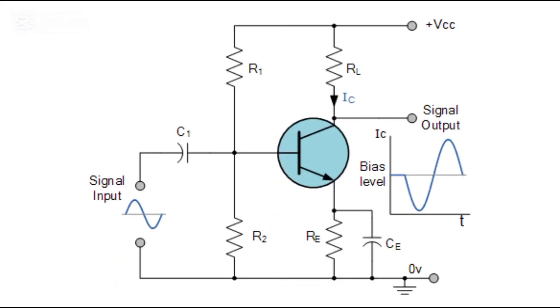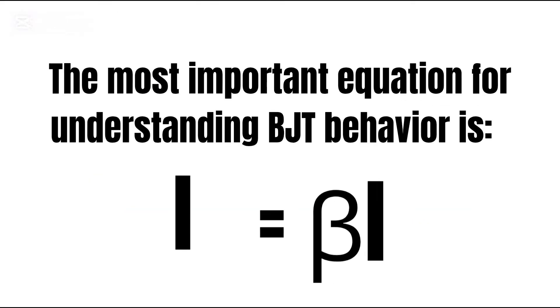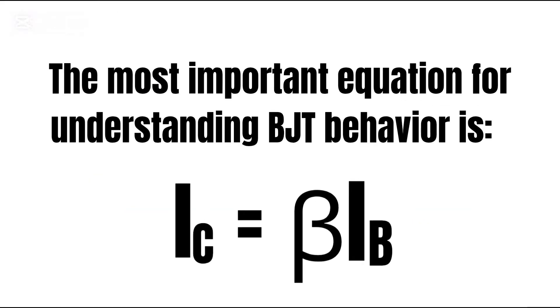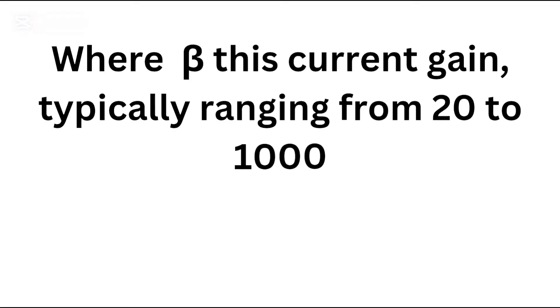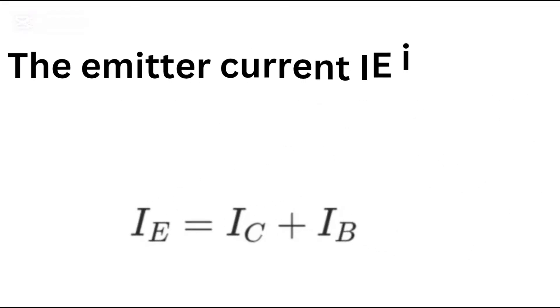Understanding the current relationships in a BJT is crucial. The most important equation for understanding BJT behavior is, IC equals beta times IB, where beta is the current gain, which typically ranges from 20 to 1000. The emitter current, IE, is simply the sum of the collector and base currents.